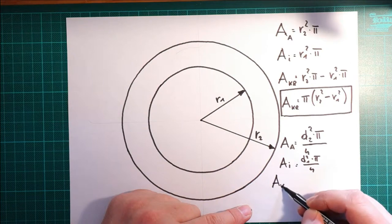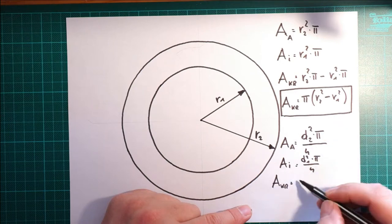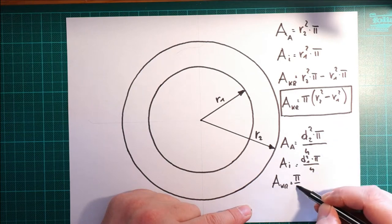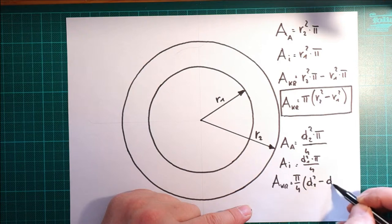Die Fläche vom Kreisring ist damit. Jetzt mache ich es schnell. Ich hebe das gleich heraus. Ihr seht mir. Pi ¼ ist zum herausheben. D2² minus D1².